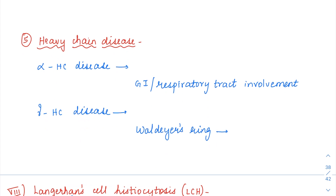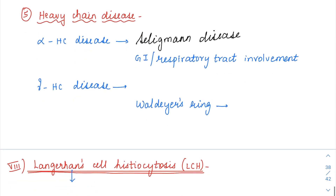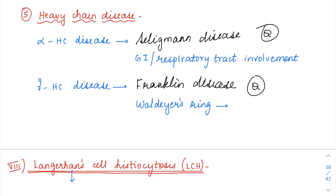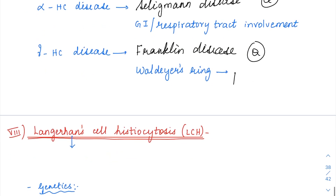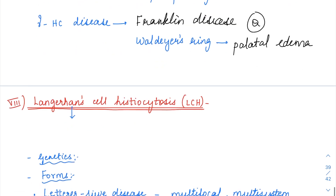Moving on to heavy chain disease: heavy chains can be produced in excess and cause disease. There are two types — alpha heavy chain disease, called Seligman disease, and gamma heavy chain disease, called Franklin disease. These can come as direct one-liners in MCQs. Alpha heavy chain disease is associated with GI and respiratory tract involvement, while gamma heavy chain disease involves Waldeyer's ring, leading to palatal edema that can become an emergency causing respiratory compromise.